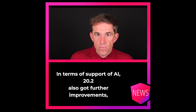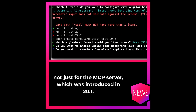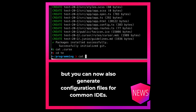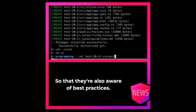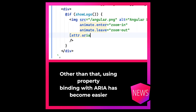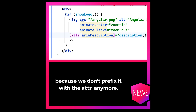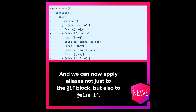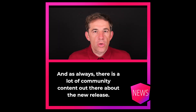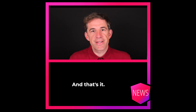In terms of AI support, 20.2 also got further improvements — not just for the MCP server, which was introduced in 20.1, but you can now also generate configuration files for common IDEs so that they are also aware of best practices. Other than that, using property binding with ARIA has become easier because we don't prefix it with ATTR anymore. And we can now apply aliases not just to the if block, but also to else if. And as always, there is a lot of community content out there about the new release.